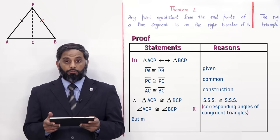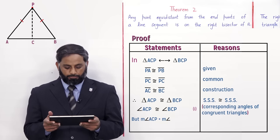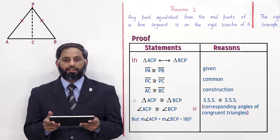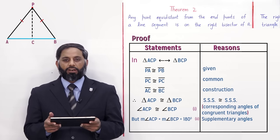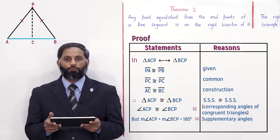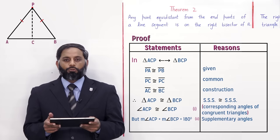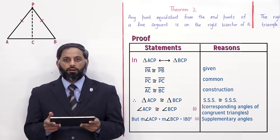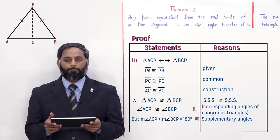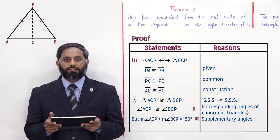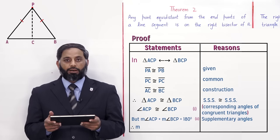But measurement of angle ACP plus measurement of angle BCP equals 180 degrees — this is equation 2, reason: supplementary angles. On a straight line, two or more angles formed have a sum of definitely 180 degrees. Now in equation 1 we said angle ACP and angle BCP are equal, and in equation 2 we said their sum is equal to 180 degrees.